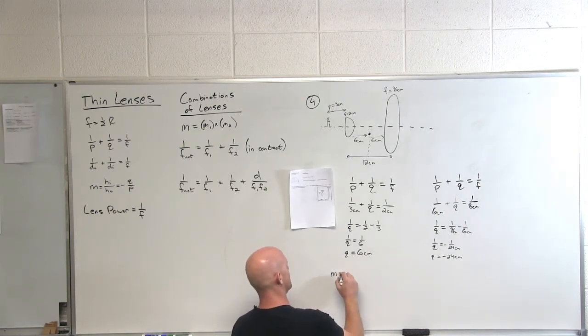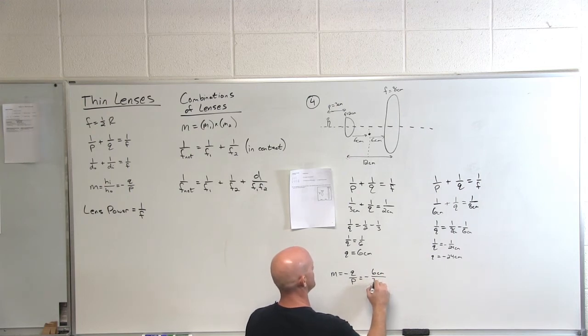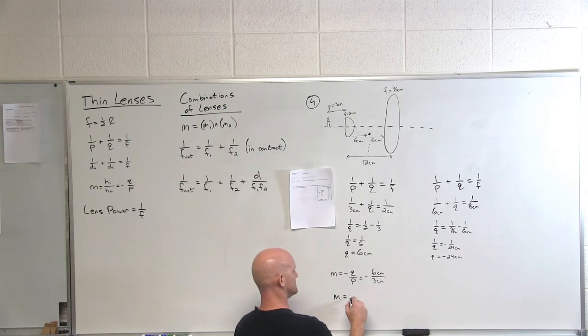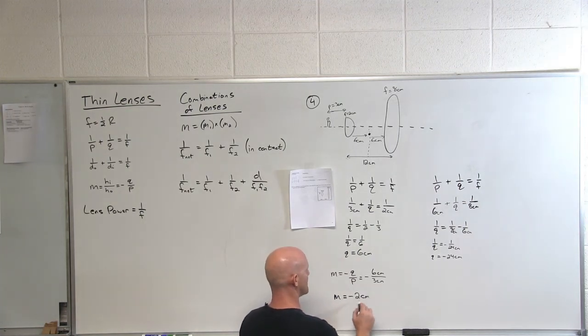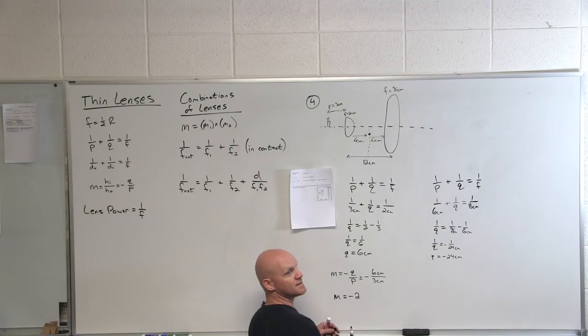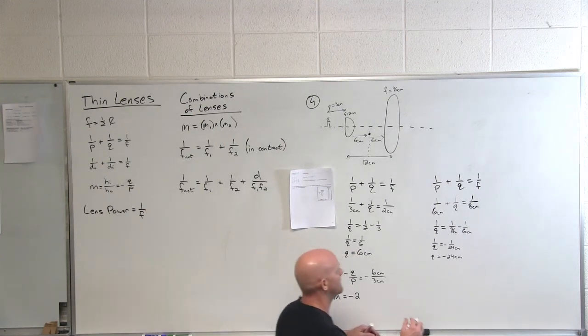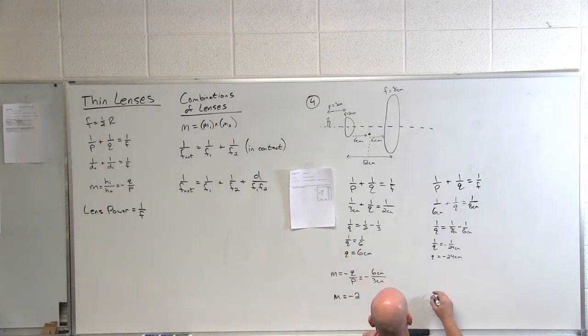Let's look at the magnification here. Magnification of the first lens, negative Q over P, is negative six centimeters over three centimeters. So what's the magnification through the first lens? Negative two. What is the fact that it's negative mean again? For magnification, it's inverted. And the fact that it's two, which is bigger than one? Yeah, it's twice as big. The image is twice as big as the original object. And if we go to the magnification for the second lens.